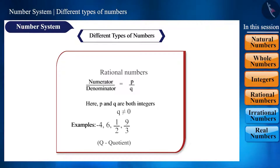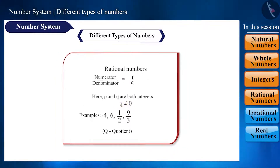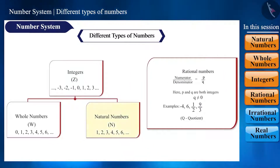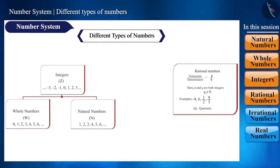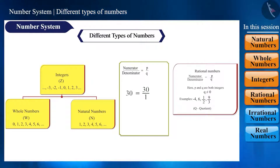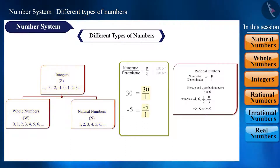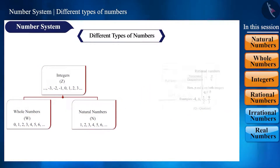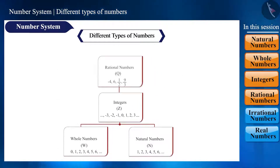Friends, if we pay attention to the definition, why is it said that q should not be 0? And can we call all the numbers seen so far as rational numbers? Yes. We can represent all these numbers in the form p by q. For example, 30 is equal to 30 by 1, and minus 5 is equal to minus 5 by 1. Here the numerator p and the denominator q are both integers. That is, all these numbers are rational numbers.